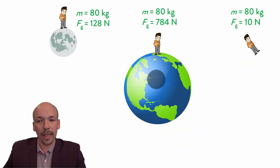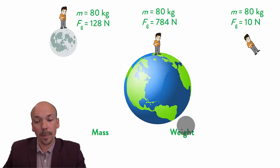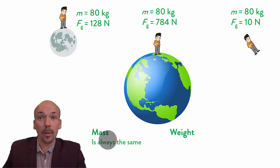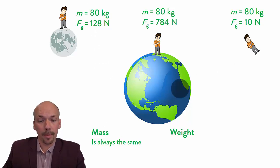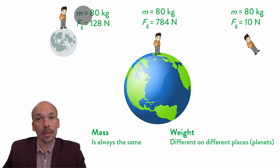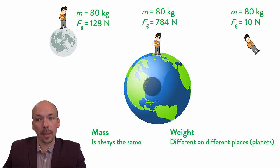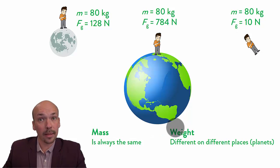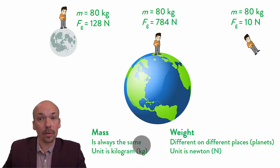So now the difference between mass and weight. As you can see here, he's standing on three different places and his mass is always the same. Mass is always the same — it doesn't matter where you are. If you are 80 kilograms on the moon, then you are 80 kilograms on Earth or in space. Weight, on the other hand, is different depending on the place where you are, because weight is a product of your mass times the gravitational acceleration, which is different on different bodies. The unit of mass is kilogram and the unit of weight is newton.